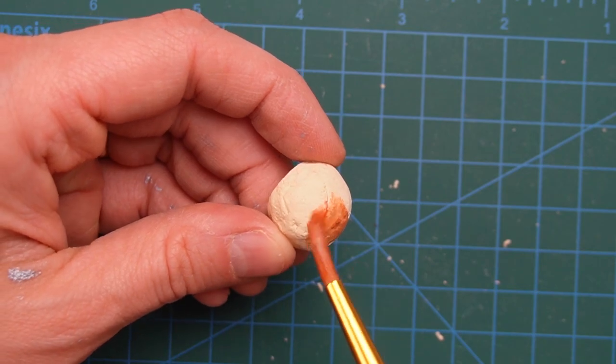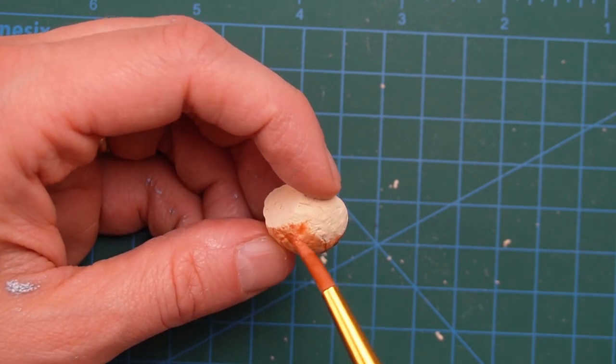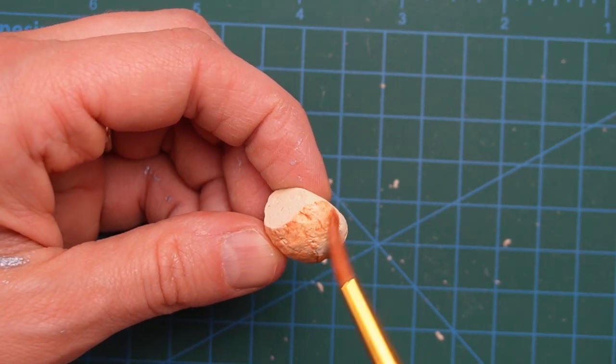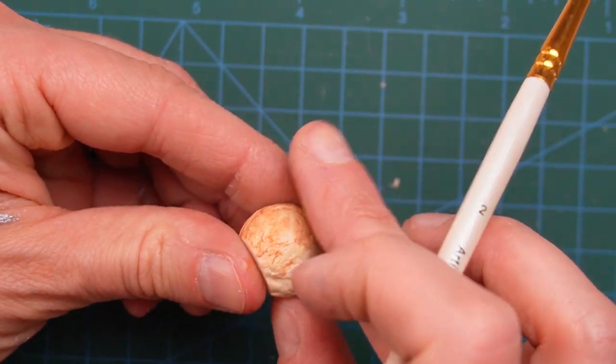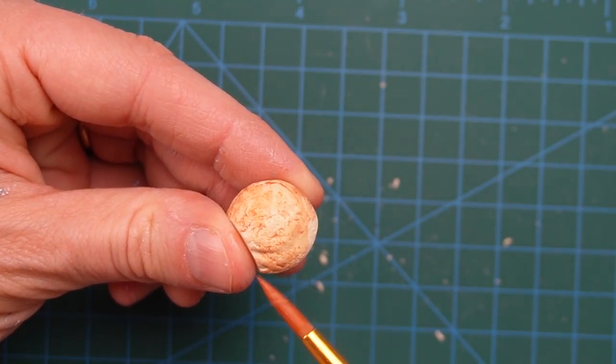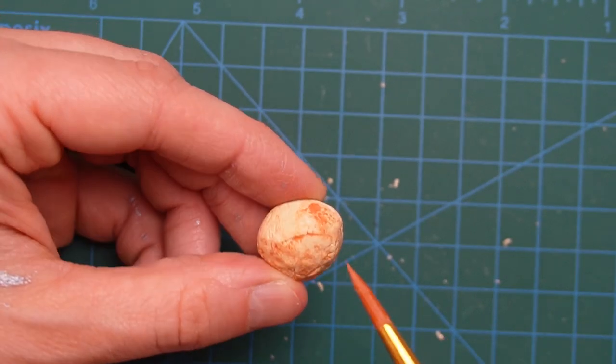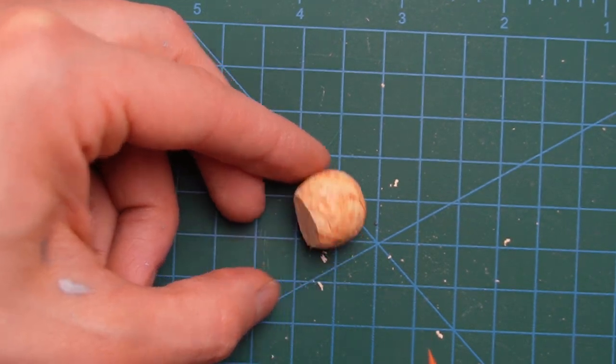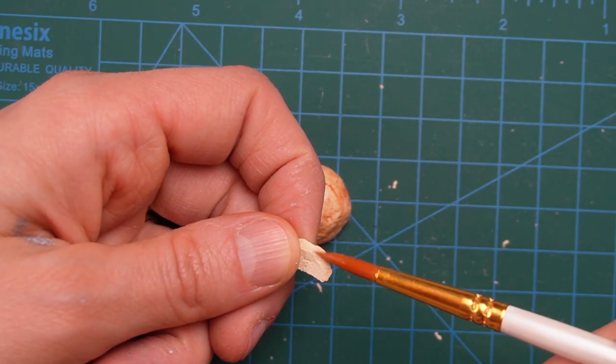When you're making miniatures from scratch you'll often make mistakes and things won't turn out the way you'd like. Making mistakes is an unavoidable part of the creative process. Instead of chucking my little bread across the room I decided to add some color and see if I could save it.